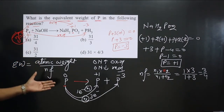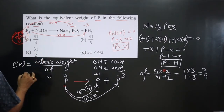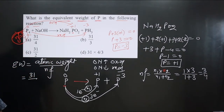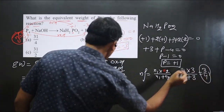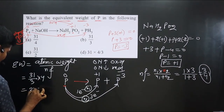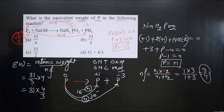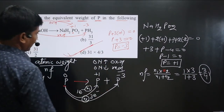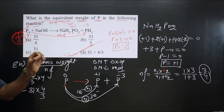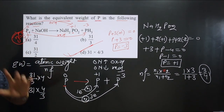The atomic weight of phosphorus is 31. So equivalent weight = 31 ÷ (3/4) = 31 × (4/3). Checking the options given, option D is the correct answer. This question is interesting because the molecular formula shows P₄, but the question asks for equivalent weight of the single element phosphorus.